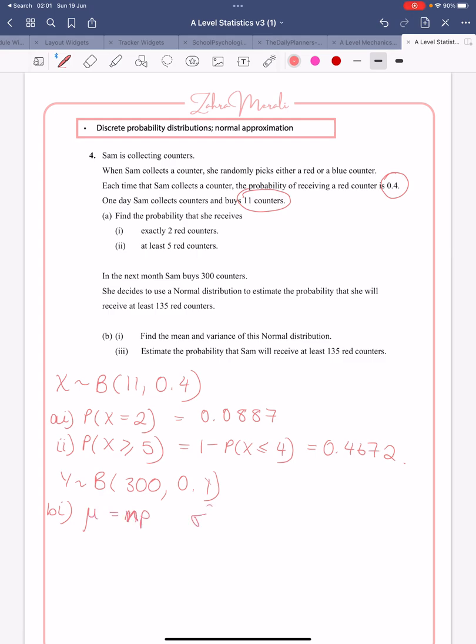And the variance is Np multiplied by 1 minus p. So here, we're going to have 300 times 0.4, and that gives us 120. And that's our mean. And then our standard deviation, or squared, which is our variance, is going to give us 72.